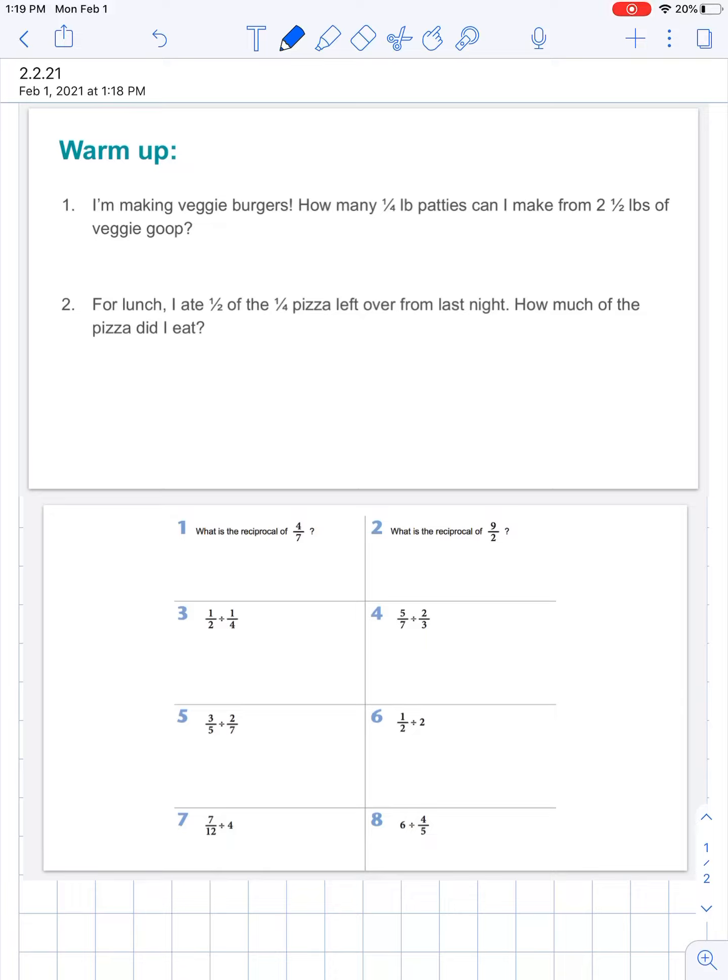So we're talking veggie goop, two and a half pounds. How many can I make? We are going to divide here. Really what we're doing is we're going to start with how much we have in total, which is two and a half pounds. We're going to divide that by these quarter pound patties to see how many of those can we make.